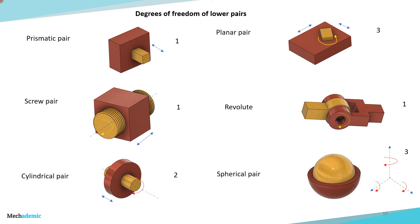In the cylindrical pair, there is rotation about the axis as well as translational movement in the arrow direction shown. So there are 2 degrees of freedom — both the translational movement and the rotation are allowed.